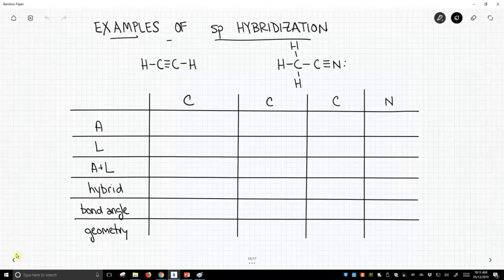We have two structures. The structure on the left is called acetylene, and the structure on the right is called acetonitrile. So for these structures, we're going to go through the same thing: count the number of attached atoms, lone pairs, and then work through hybridization, bond angles, and geometry.